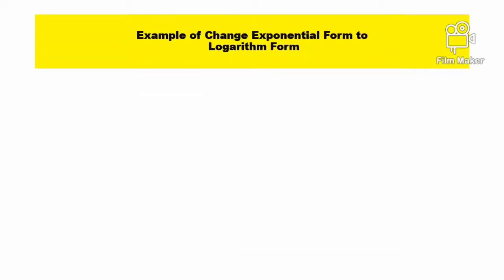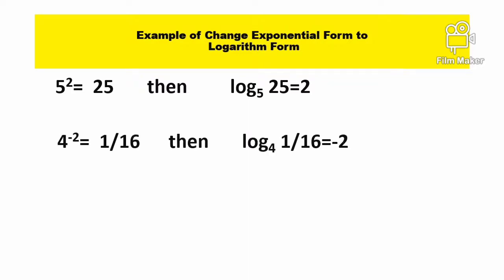Example of changing exponential form: 5 squared equals 25, and then logarithm base 5 of 25 equals 2. Also, 4 raised to the negative second power equals 1 divided by 16, and then logarithm base 4 of 1/16 equals negative 2.